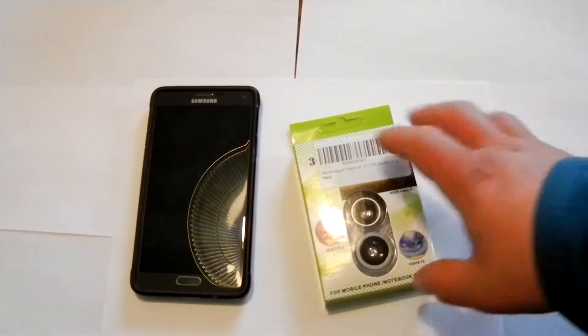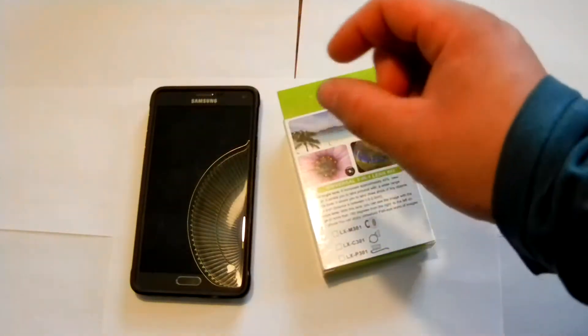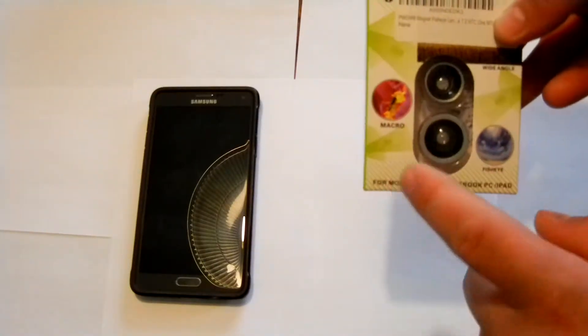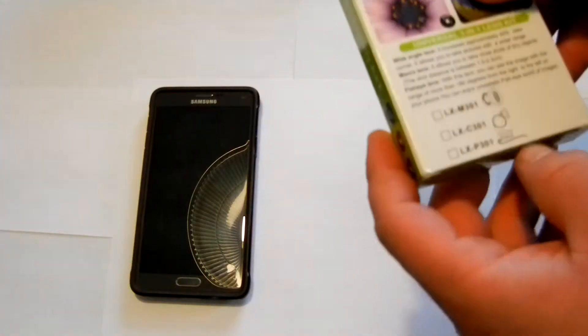but a lot of times these magnetic attachable lenses have really thick magnets. And I'm using the wide angle lens. I have no real use for the macro or the fisheye. I just think they're kind of gimmicky. Although these lens kits are usually pretty popular for those two reasons.